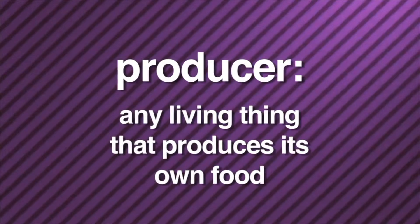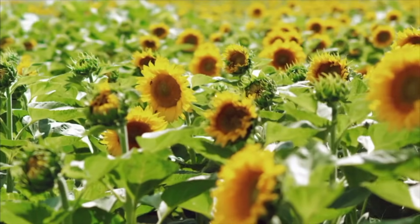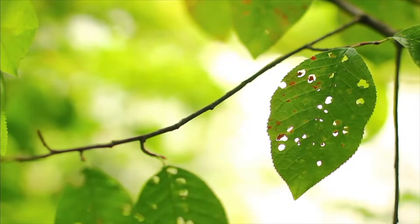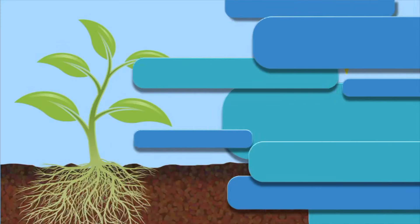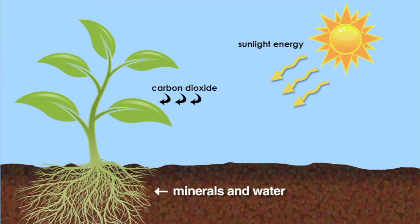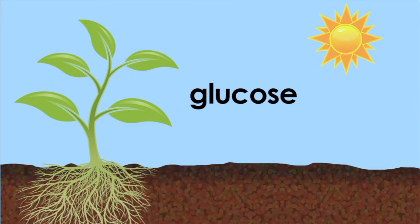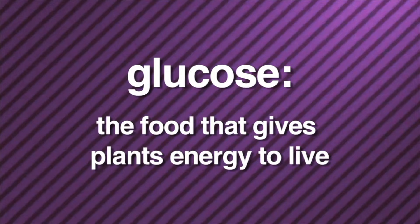Let's begin our discussion with producers. A producer is any living thing that produces its own food. Plants are producers. Plants produce their own food. Like all living things, they need food to live and grow. To produce food, plants use light energy from the sun, carbon dioxide from the air, and minerals and water from the soil. This process is called photosynthesis. The food plants produce is called glucose. Glucose is the food that gives plants energy to live.